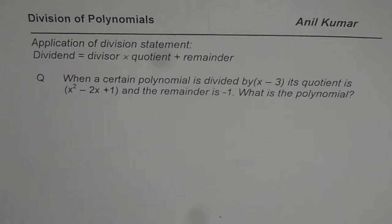The question here is, when a certain polynomial is divided by x minus 3, its quotient is x squared minus 2x plus 1 and the remainder is minus 1. What is the polynomial?